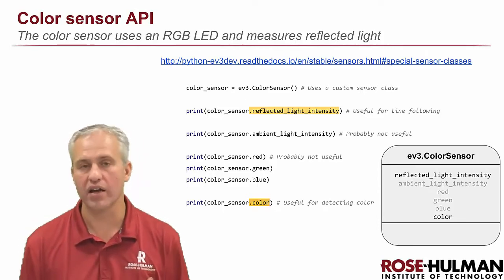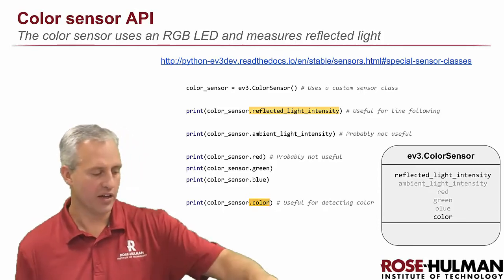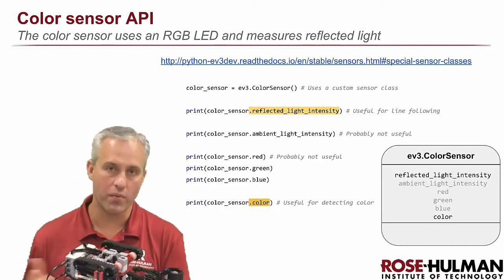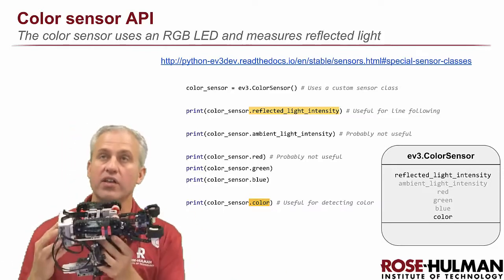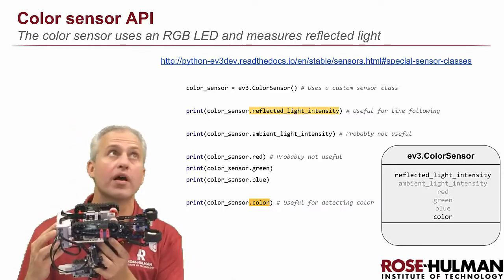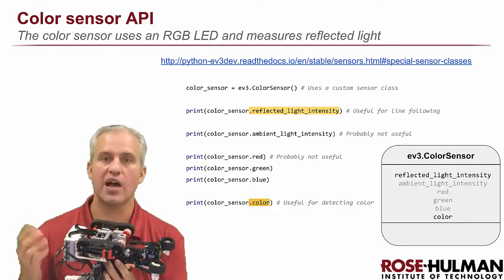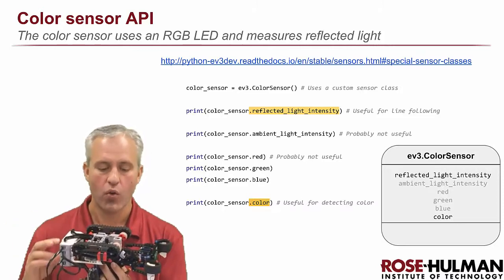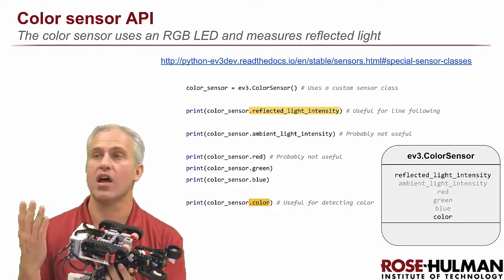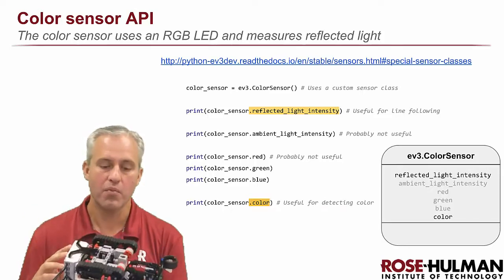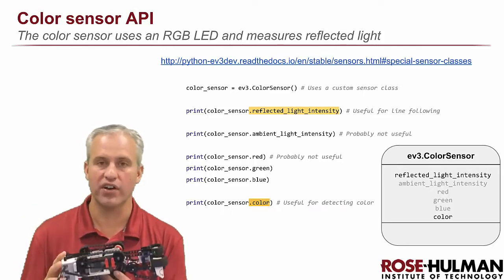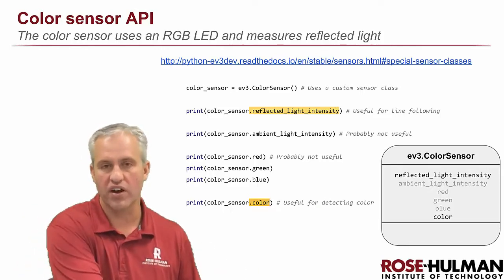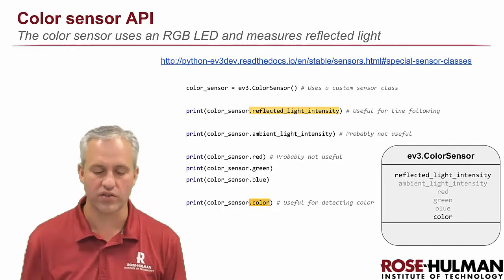Ambient light we are not going to use, but I thought I'd mention it. If this sensor were mounted differently — like pointing up at the room — you could just see how much ambient light there was in the room. We're not really going to use that because we're not pointing up, but maybe for your project you'll do something where you would use it. It's also a percentage of how much light is there.